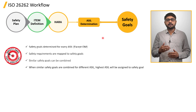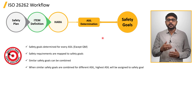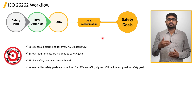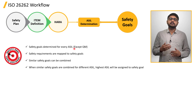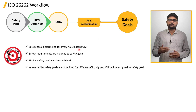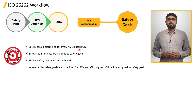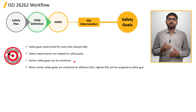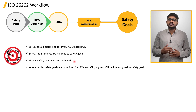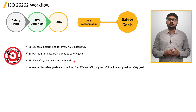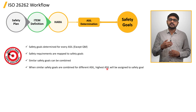Safety goals represent the top level safety requirements for the item, leading to a functional safety concept called FSC. The ASIL determined for a hazardous event is assigned to its corresponding safety goal. Similar safety goals can be combined if they have the same ASIL level. In cases where similar safety goals have different ASIL levels, the highest ASIL level is assigned.